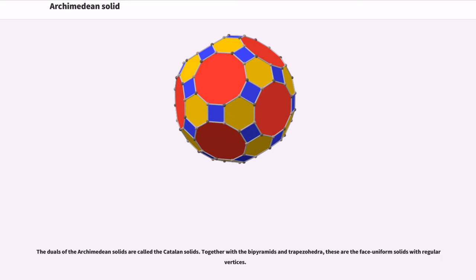The duals of the Archimedean solids are called the Catalan solids. Together with the bipyramids and trapezohedra, these are the face uniform solids with regular vertices.